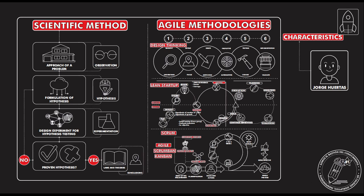All of these methodologies share the same principles, but the focus is different. Scrum and Scrumban are specific for IT and the software world. Kanban is specifically made for industrial production. Lean Startup is focused on new enterprises. Design Thinking is focused on developing products and services based on real needs. So even though they share some similarities, they are very different.